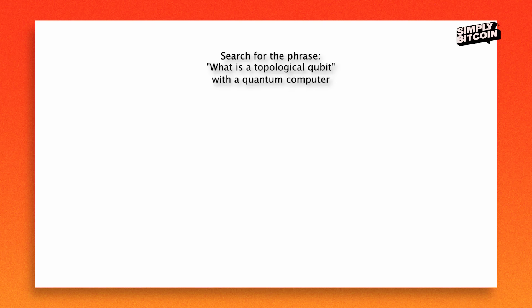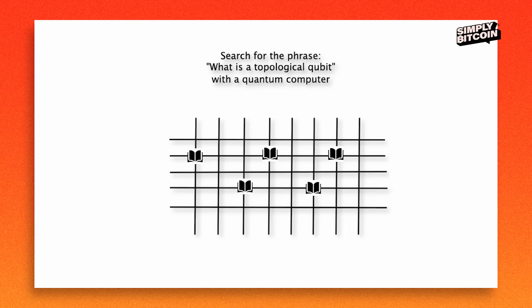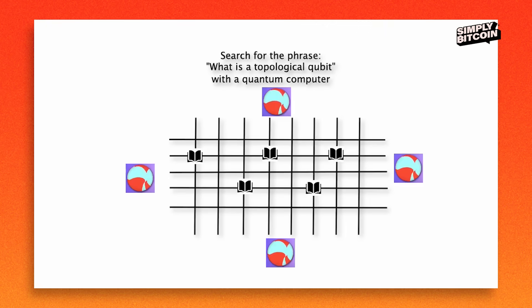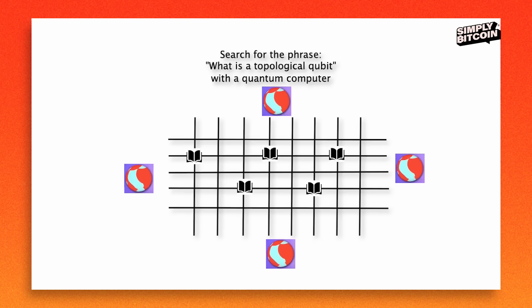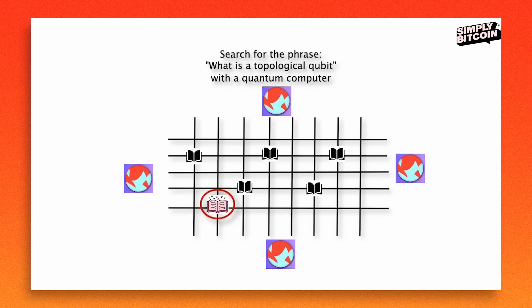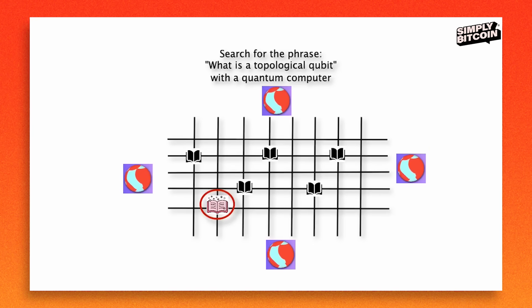Now let's talk about quantum computing. Same library, same thousand books, same phrase. But this librarian isn't flipping through pages — they're able to scan the whole library in one shot, somehow knowing every book's contents all at once. They find the phrase in a fraction of the steps — maybe 32 steps instead of a thousand. This is effectively what quantum computing can do. It has massive parallelism.